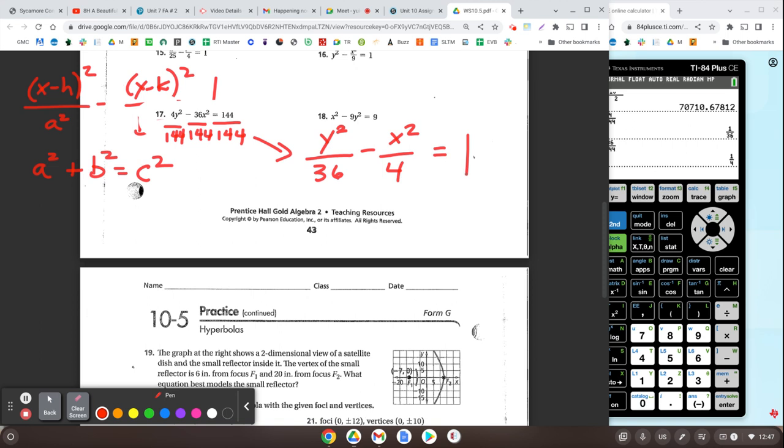So now I know that a squared is 36 and b squared is 4. So to find my foci, I would do 36 plus 4 is c squared. 40 is c squared.